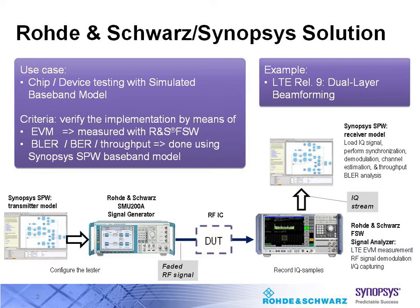IQ data is then captured and stored from this device using the Rohde & Schwarz FSW signal analyzer. In this case, we used two FSWs — one for each layer of the dual layer beamforming system.